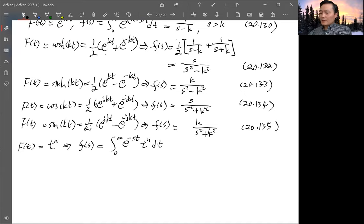Remember gamma(z) is defined as integrating zero to infinity e^(-t) t^(z-1) dt. This is equation 13.5. So by comparing this form with this one, you need to do a change of variable. Instead of t, you integrate over st.